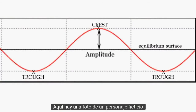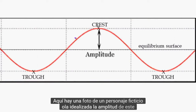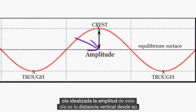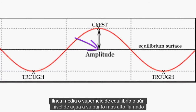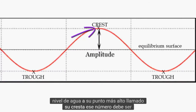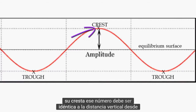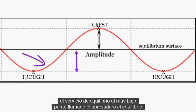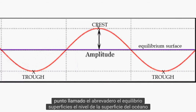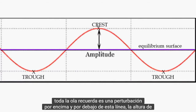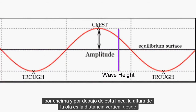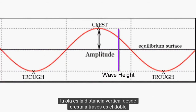Here is a picture of a fictionalized, idealized wave. The amplitude of this wave is the vertical distance from its midline, or equilibrium surface, or still water level, to its highest point, called its crest. That number should be identical to the vertical distance from the equilibrium surface to the lowest point, called the trough. The equilibrium surface is the level the ocean surface would be at if there were no waves at all. The height of the wave is the vertical distance from crest to trough — it is twice the amplitude.